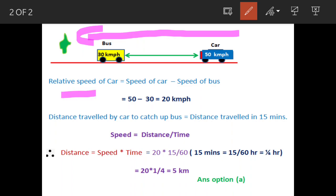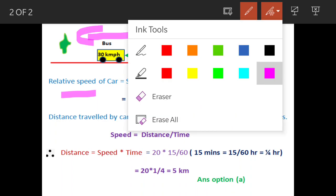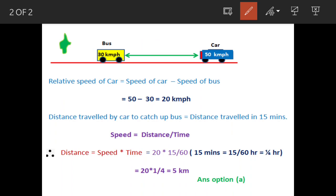In our case, relative speed of the car with respect to the bus will be speed of the car minus speed of the bus. The bus is going at 30 kilometers per hour and the car is going at 50 kilometers per hour, so the relative speed of the car will be 50 minus 30 equals 20 kilometers per hour.